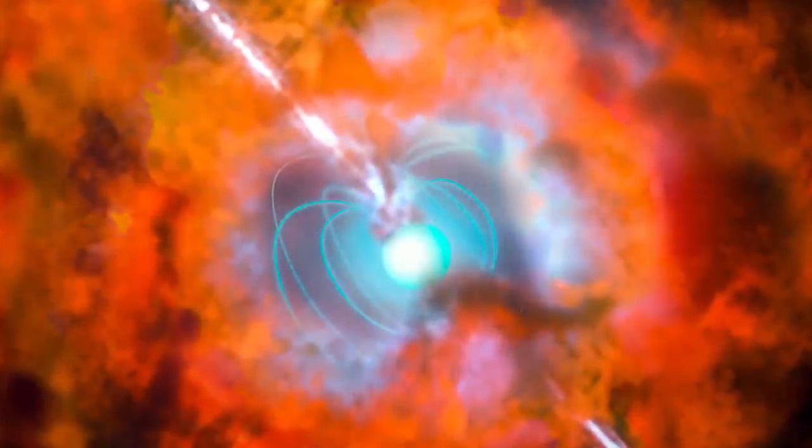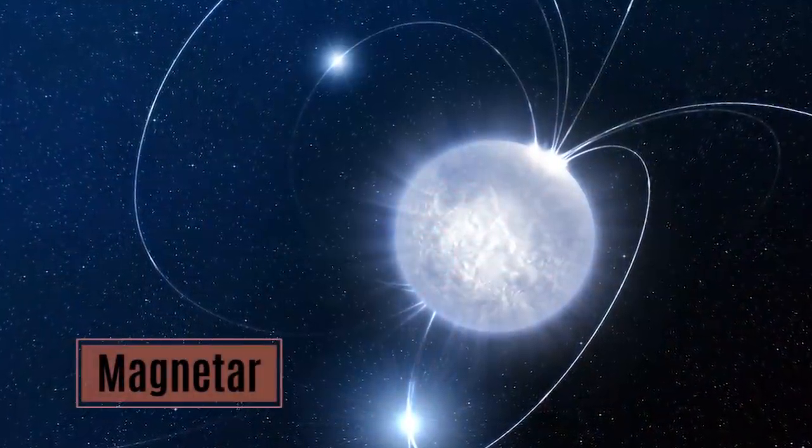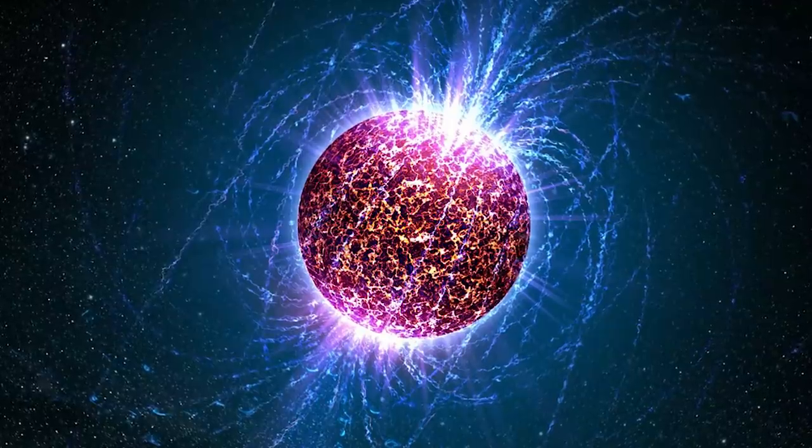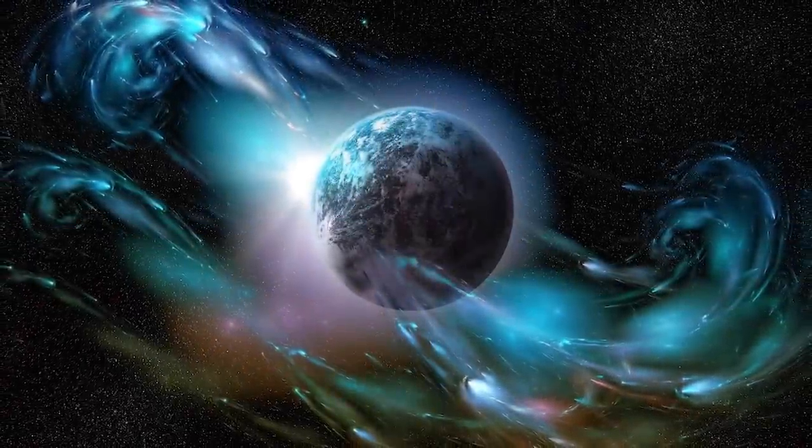At number 9 on our list is one of the most mysterious and terrifying objects in space, a magnetar. Short for magnetic stars, these are an extremely dense type of neutron star with an ultra-strong magnetic field, up to 1 quadrillion Gauss. That's 1,000 trillion times stronger than the Earth's magnetic field.